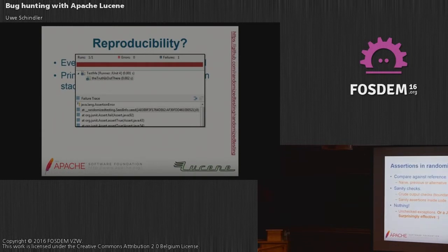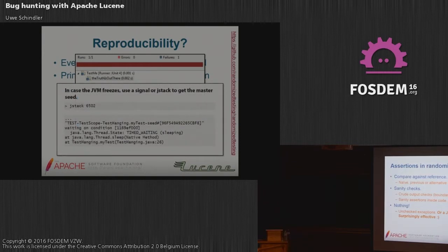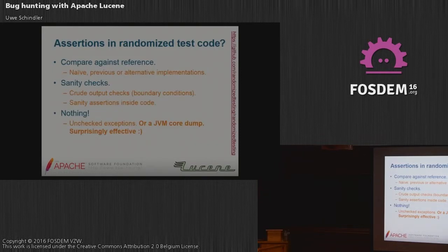How do you do assertions in randomized test code? You can compare against a reference — if you have two algorithms doing the same thing, just compare results with randomized input. You can also check boundary conditions. And finally, you can do nothing and just run your tests and wait until your JVM crashes. And that's actually what we're doing when testing OpenJDK early access builds.